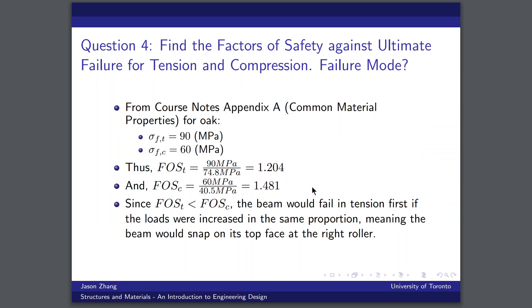So finally, for the last part of this quiz, we need to find the factors of safety against ultimate failure for tension and compression, as well as how the beam would fail if we increase the loads while keeping them proportional to each other. So looking at our course notes, Appendix A of common material properties tells us that for oak, the ultimate tensile strength is 90 megapascals and the ultimate compressive stress is 60 megapascals. Now the truth is wood can be more complicated than this, but we're just going to take these for face value.